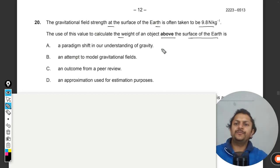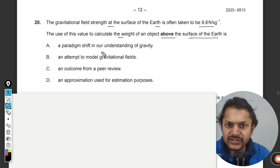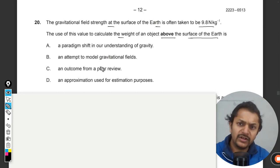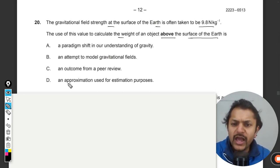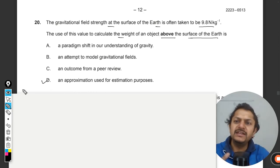A paradigm shift in our understanding of gravity, an attempt to model gravitational field, an outcome from a peer review, an approximation used for estimation purposes only. I think the answer will be D because that seems to be the most suitable.